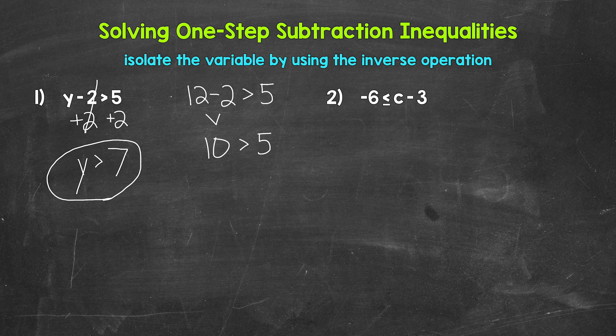We have negative six is less than or equal to C minus three. So we are subtracting three from C here. We need the inverse operation of subtraction. That's addition. So add three to the right side of the inequality. That means we need to add three to the left side as well.